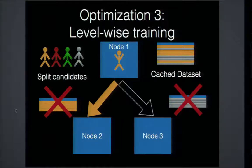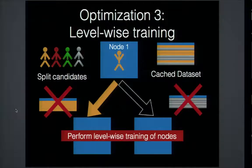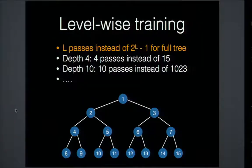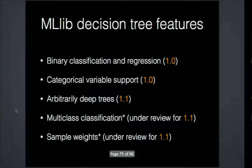Any instance that doesn't belong to node 2 belongs to node 3 and vice versa, since they use opposite filtering criteria. So we train them in parallel using level-wise training, training all nodes at a particular level simultaneously. If you have L levels in a tree, you make L passes over the data instead of 2^(L−1). At depth 4, that's 4 passes instead of 15; at depth 10, it's 10 passes instead of 1023 — substantial savings even for shallow trees.